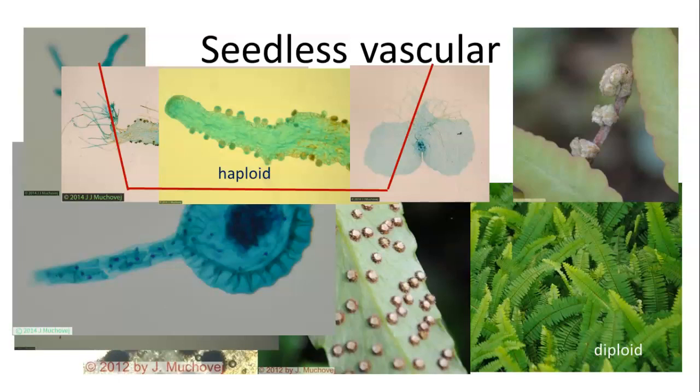The haploid phase, or the gametophyte, has a very short segment of the life cycle of this plant. It normally spends its time in the sporophyte phase.